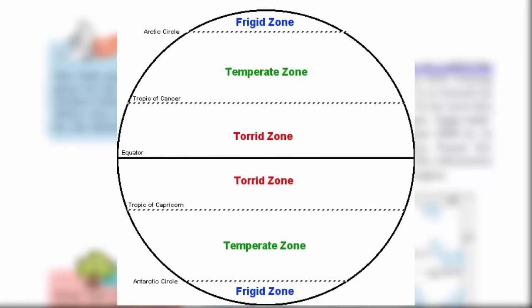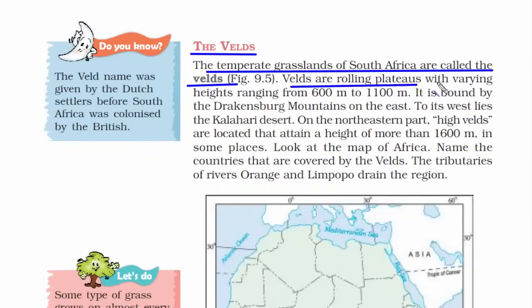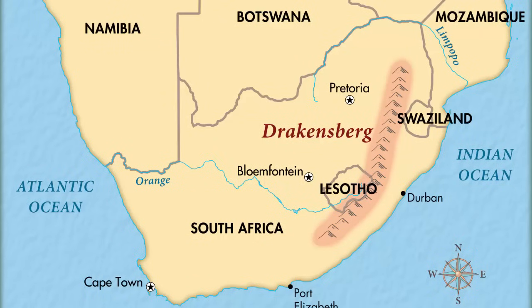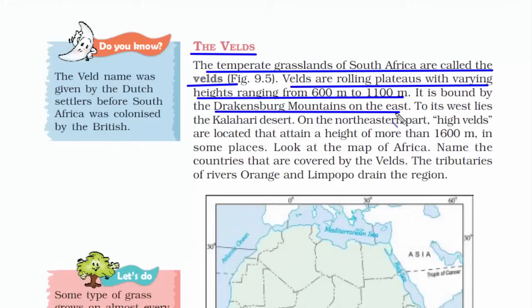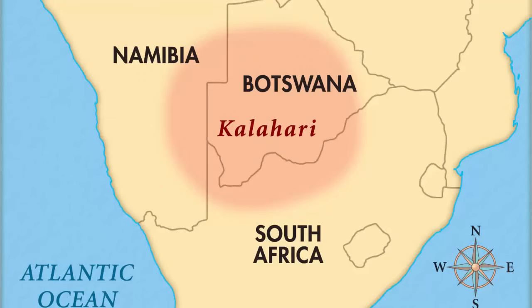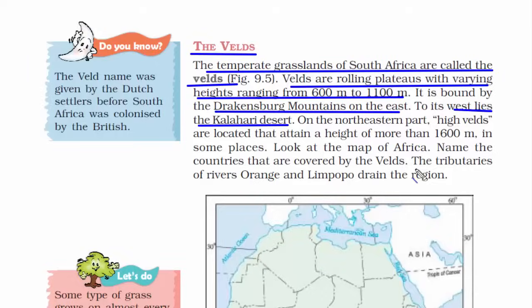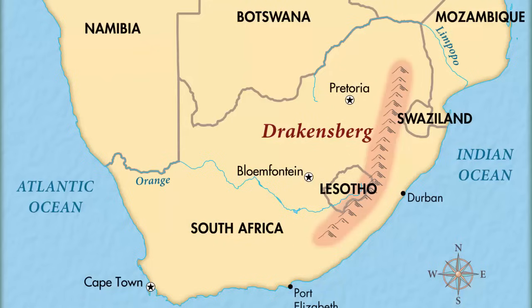This region has a lot of plateaus ranging from 600 to 1100 meters. On the eastern side it has a barrier called the Drakensberg Mountains, and on the western side you have the Kalahari Desert. The tributaries of the rivers Orange and Limpopo drain in this region.